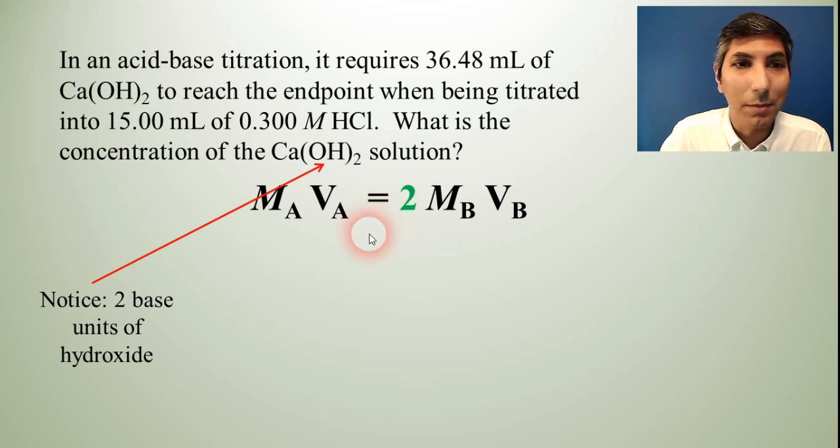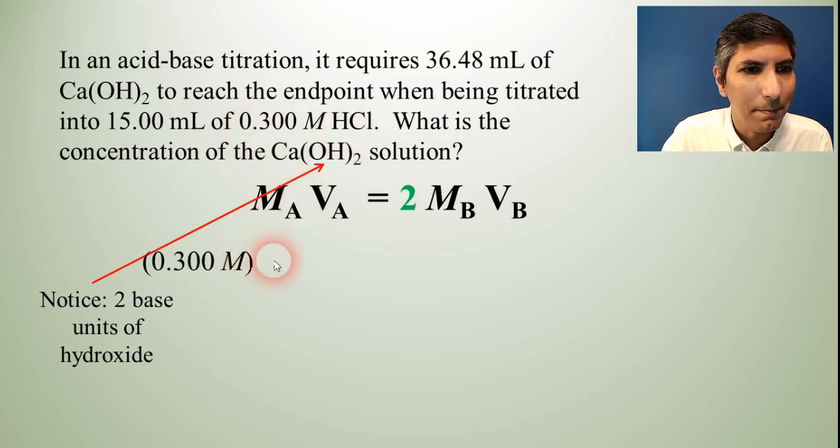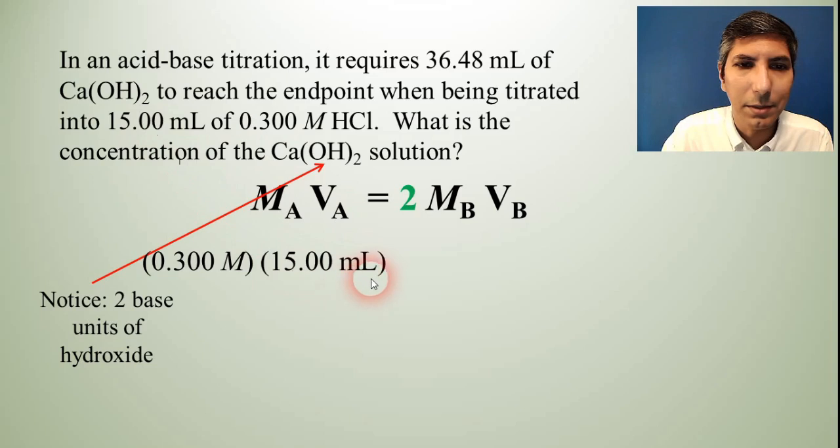Now we can work the problem as usual. The molarity of the acid is given to us. It's 0.300 molar of our acid. So that goes in for M sub A. The V sub A, the volume of the acid is 15 milliliters. So that goes in for V sub A.